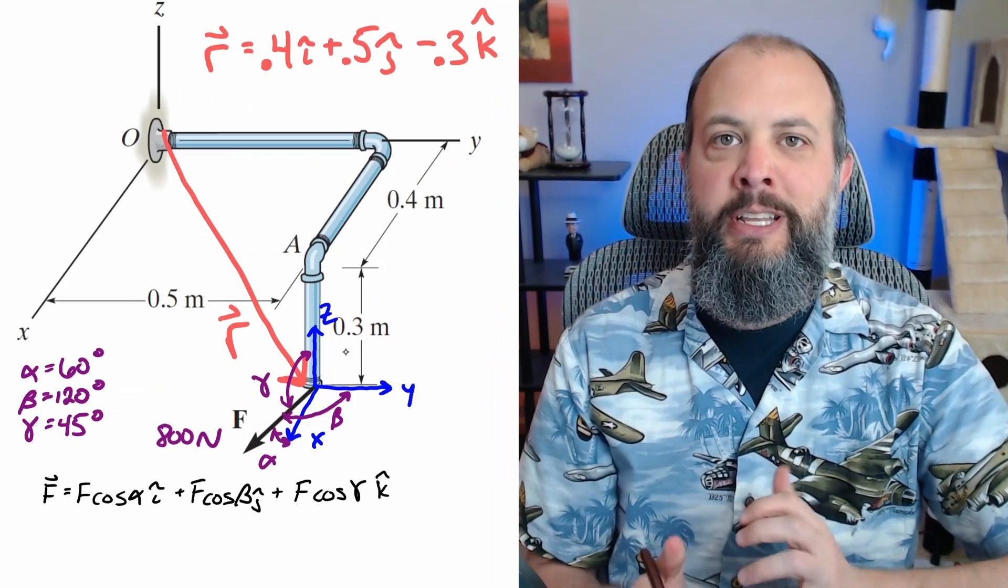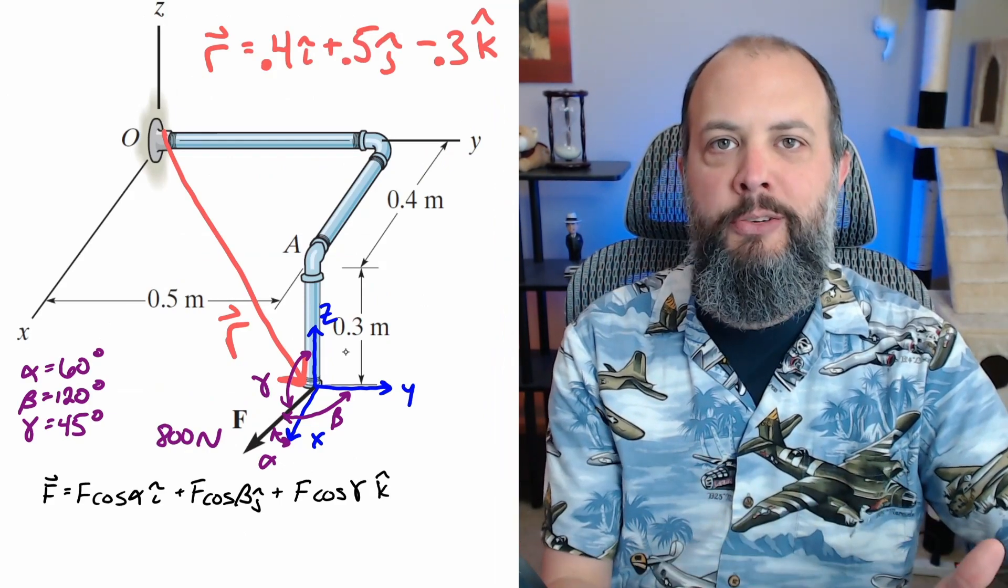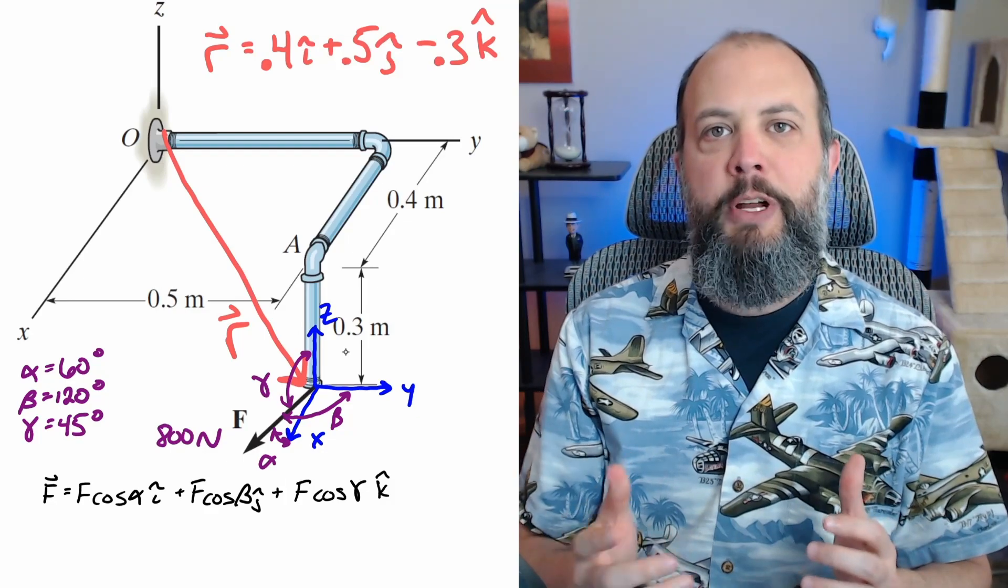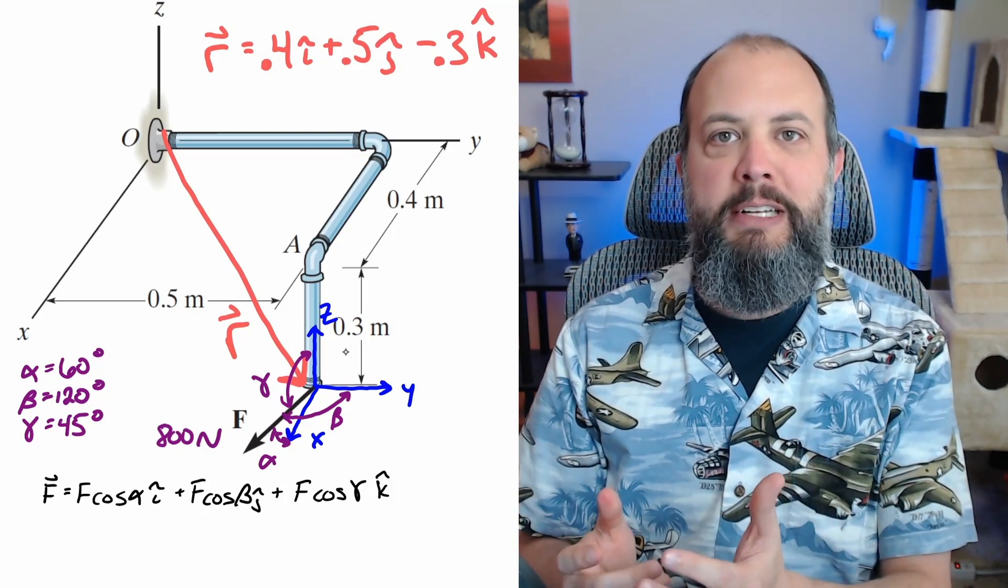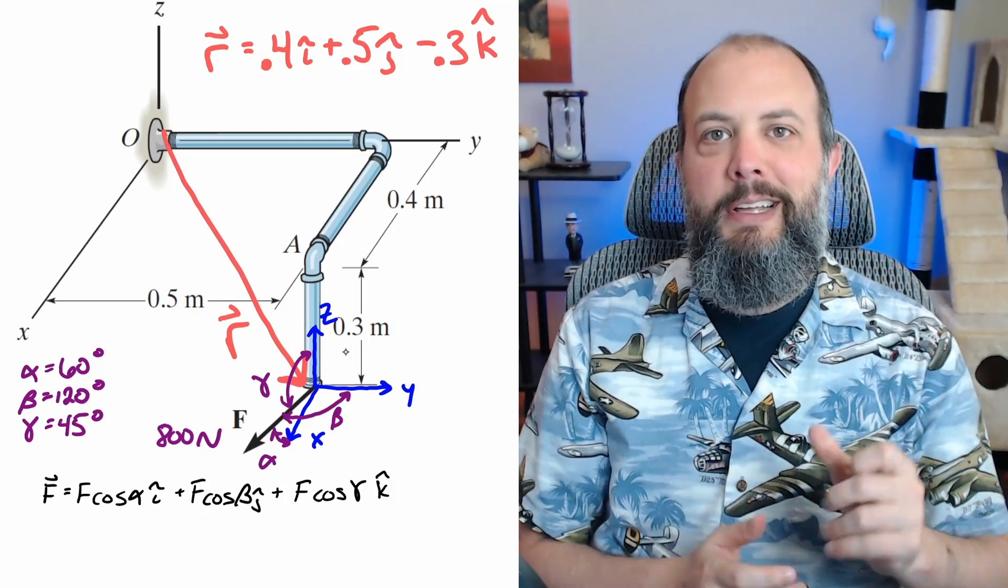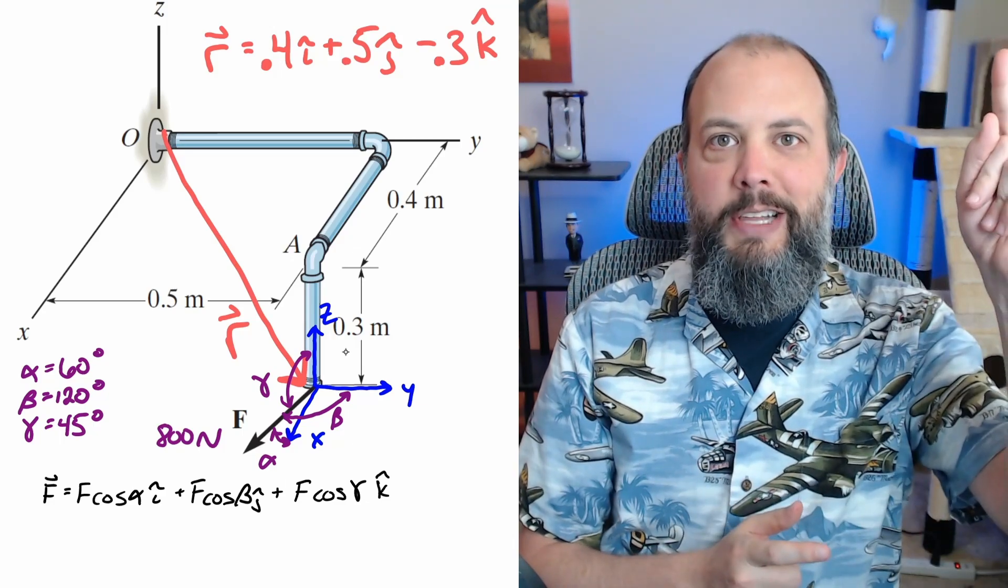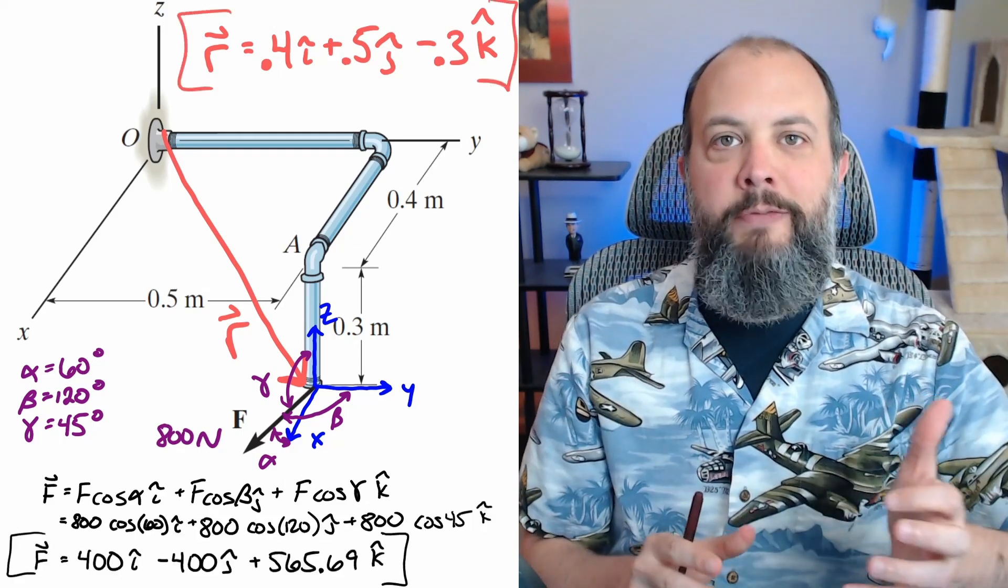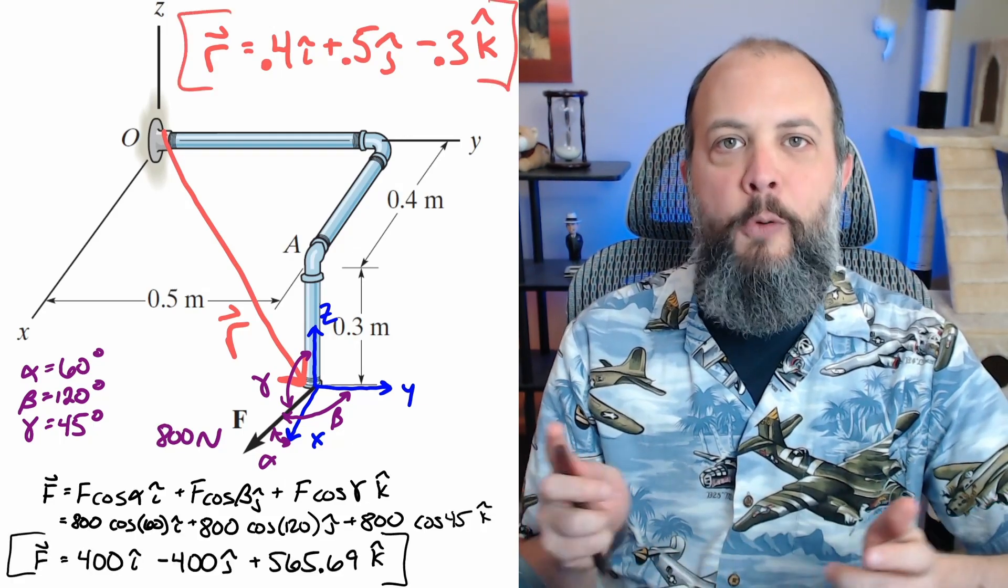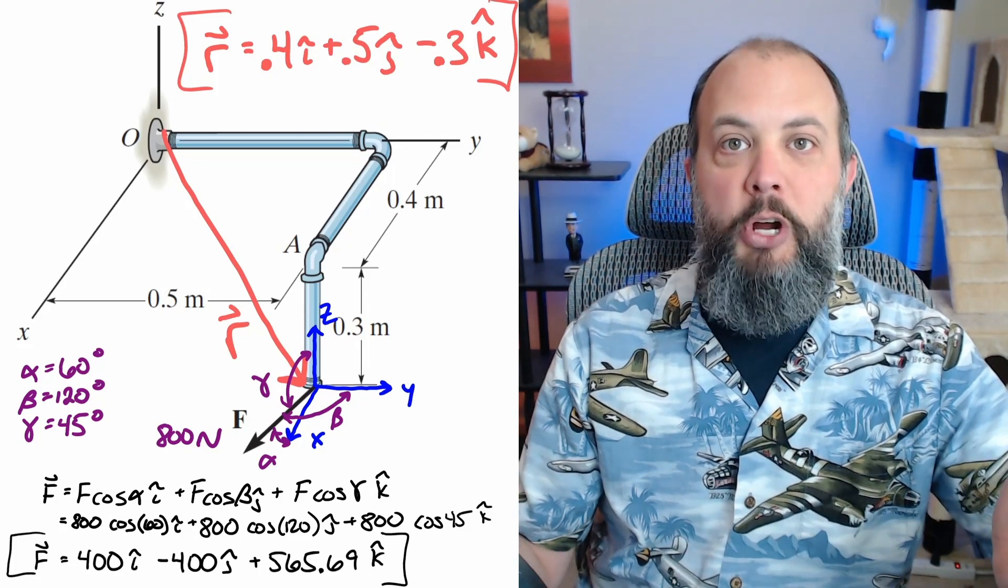Next, we'll find the force vector F using the provided coordinate direction angles. If you need a review on converting a three-dimensional vector when you're given coordinate direction angles into Cartesian form, I've got another video about that. You can click the link up here. So now I've got the two pieces, the position vector and force vector, both in Cartesian form. Now we do cross product.